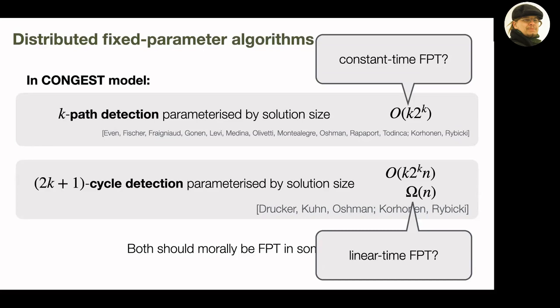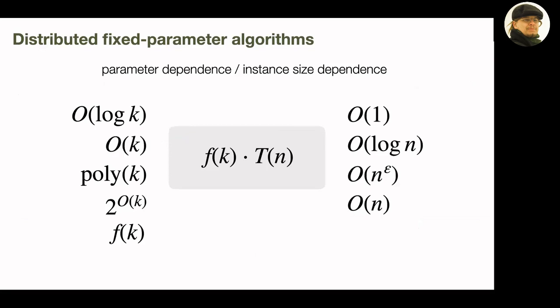The FPT phenomenon happens in distributed computing even outside the fully FPT regime. I like to think about this in terms of dependence on the parameter and dependence on the instance size, and asking what trade-offs exist. For instance, in LOCAL with maximum degree, you can make the n-dependence really small but then pay more in the max-degree dependence, or make the n-dependence logarithmic and not pay the large delta dependence.